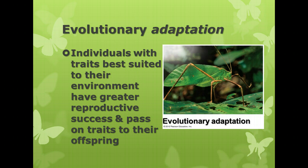Next we have evolutionary adaptation. This is one of the core themes of biology, talking about evolution or change over time. Individuals within a species who have adaptations or traits that are advantageous to them in surviving their environment will have greater reproductive success and pass on those traits to their offspring. Over time, the accumulation of these advantageous traits can lead to the development of new species or change within a species. Living things do change over time, and this is because of evolutionary adaptations.